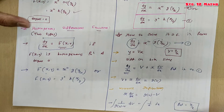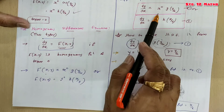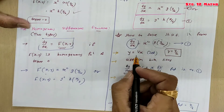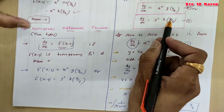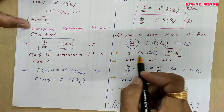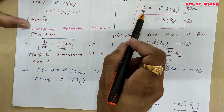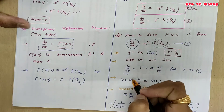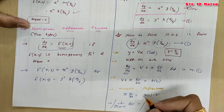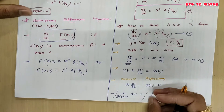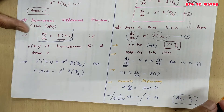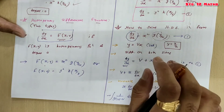To summarize: for dy/dx = g(y/x), assume y = vx, differentiate to get dy/dx = v + x·dv/dx, substitute, separate variables v and x, integrate, and finally substitute v = y/x back to obtain the solution.